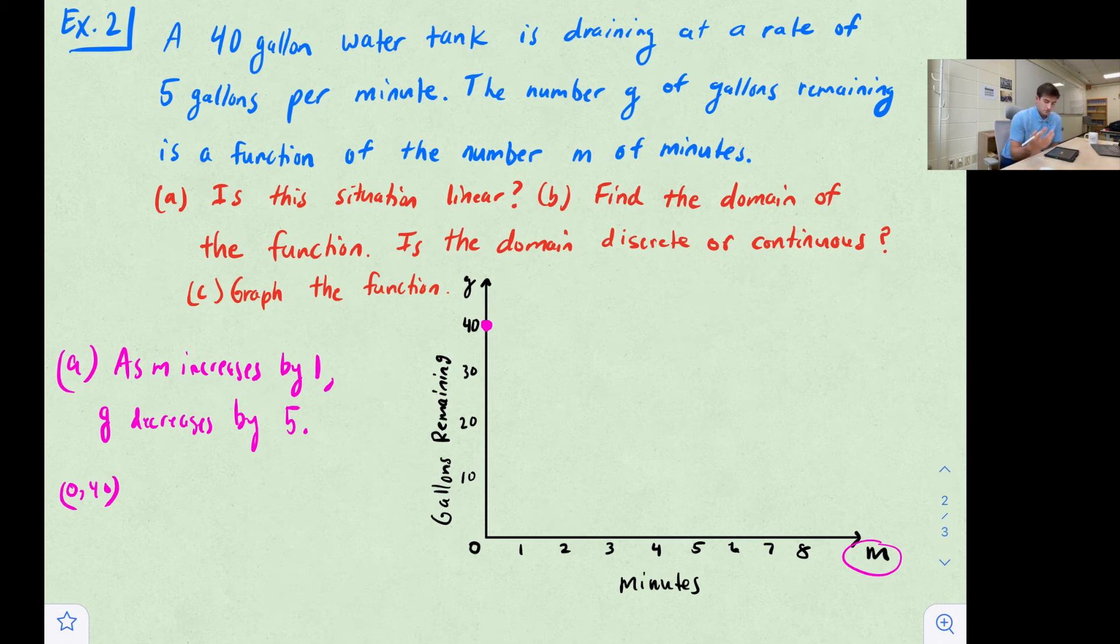After one minute, we're down to 35 gallons, two minutes we're at 30, three minutes we're at 25, fix that a little bit. Three minutes we're at 25, four minutes we've got 20 gallons, five minutes we're at 15, six minutes we're at 10 gallons.